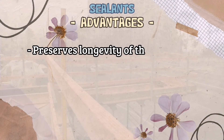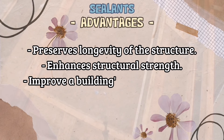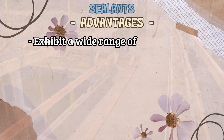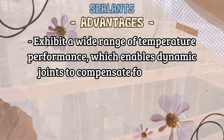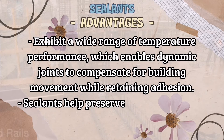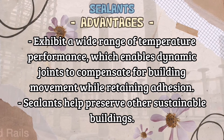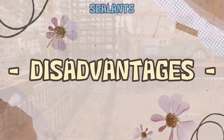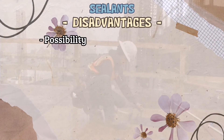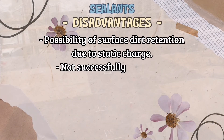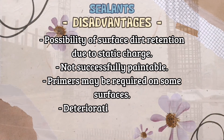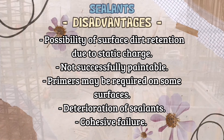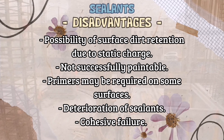Sealants usually preserve the longevity of the building structure, enhance structural strength, and improve buildings' ability to prevent or reduce infiltration of wind, rain, and airborne contaminants. They also exhibit a wide range of temperature performance, which enables dynamic joints to compensate for building movement while retaining adhesion. Sealants also help preserve other sustainable building materials by preventing elements from entering a building structure, increasing overall sustainability. Disadvantages include: possibility of surface dirt retention due to static charge; difficulty painting the wall; primers may be required on some surfaces; and deterioration due to prolonged exposure to water, ultraviolet light, and freeze-thaw cycles.